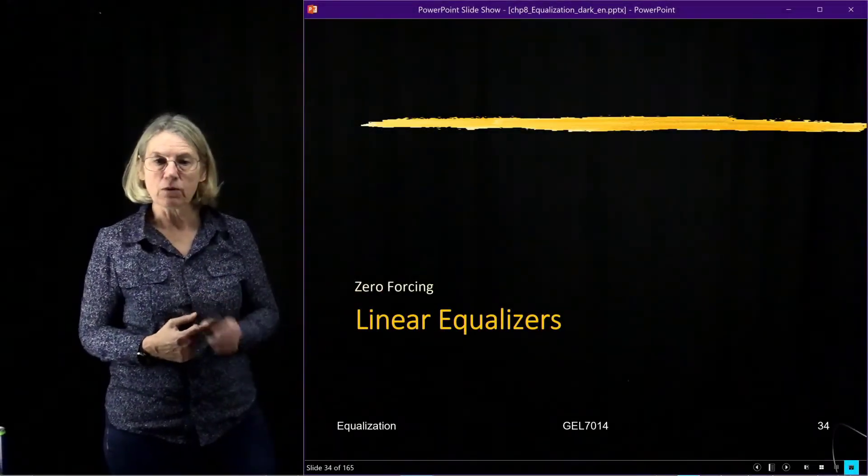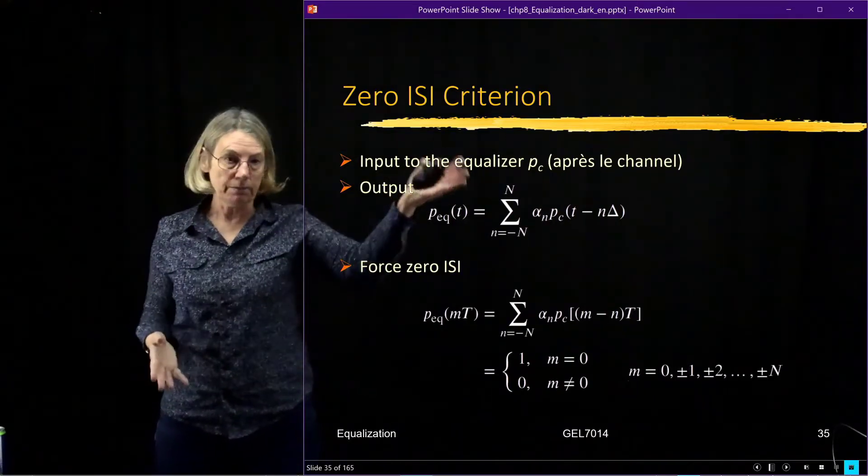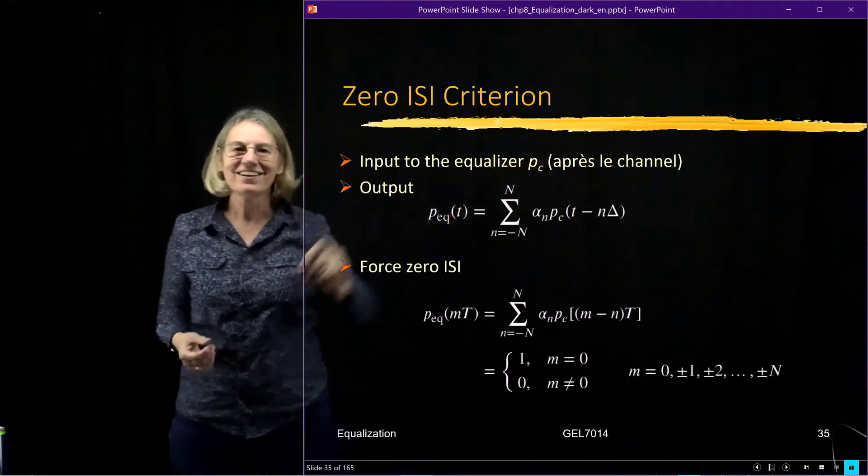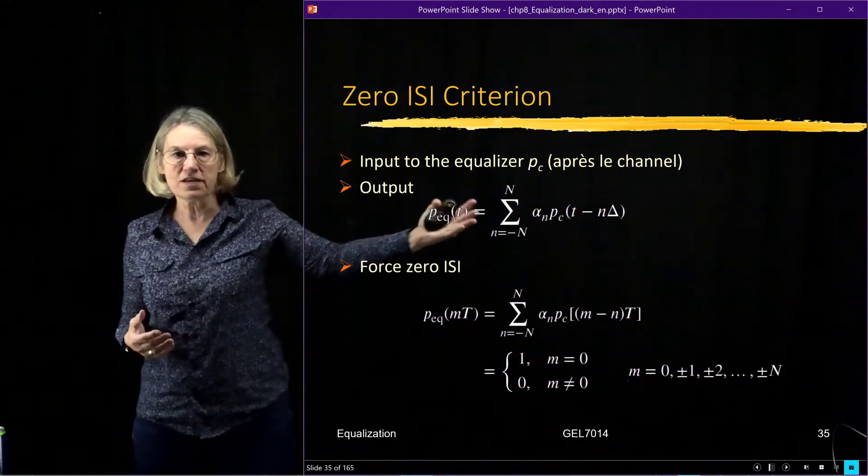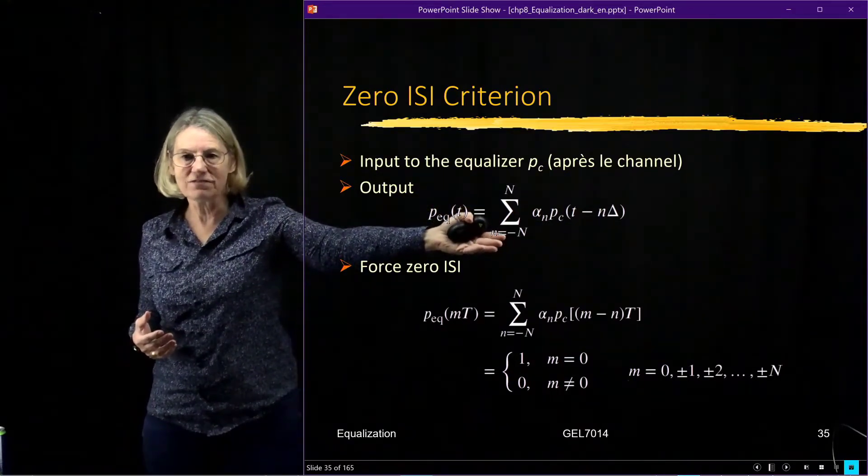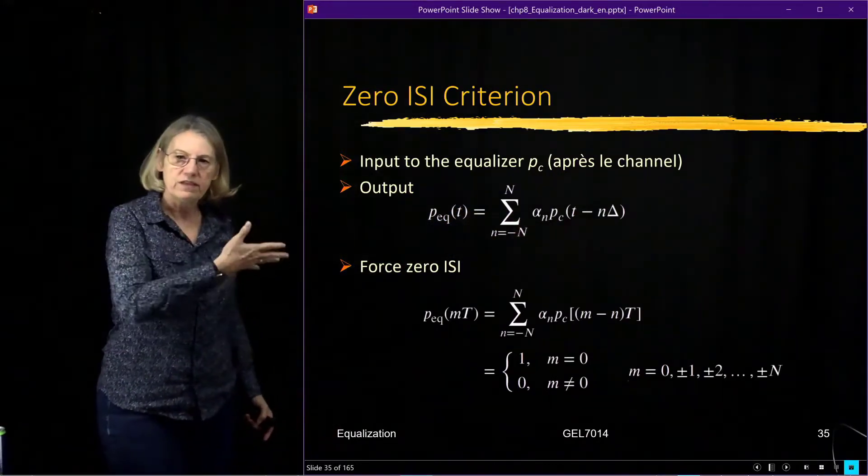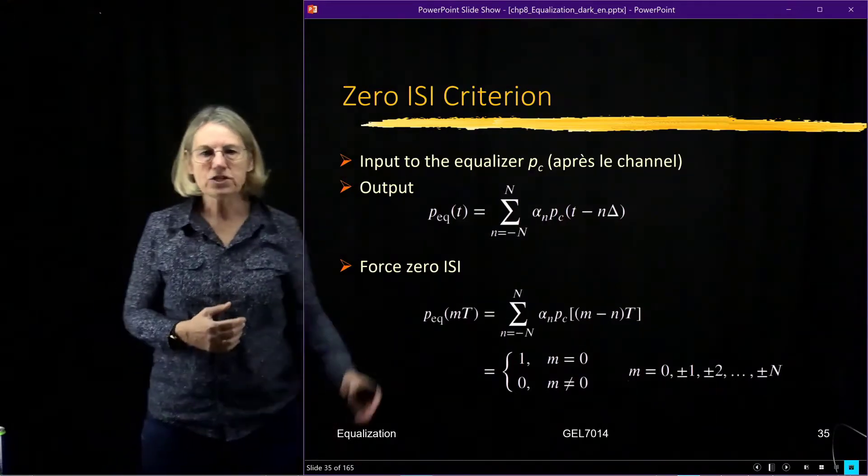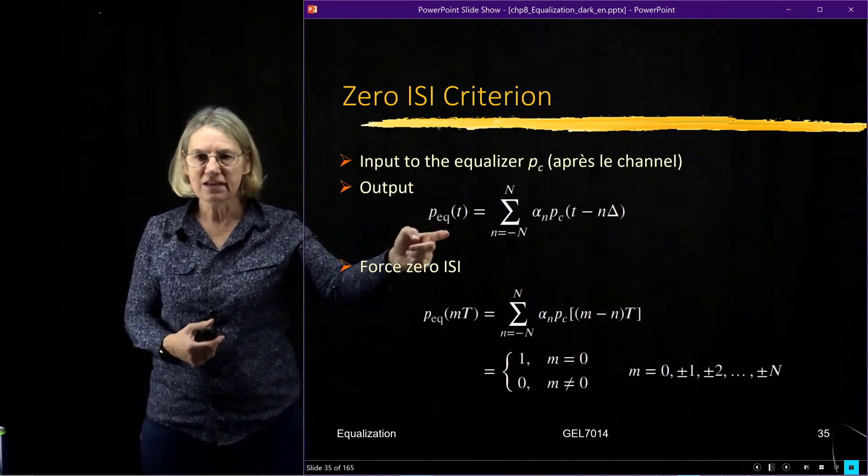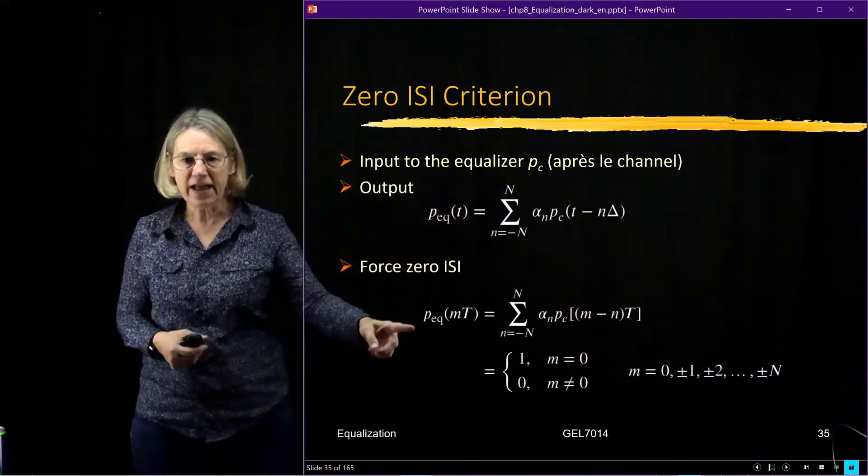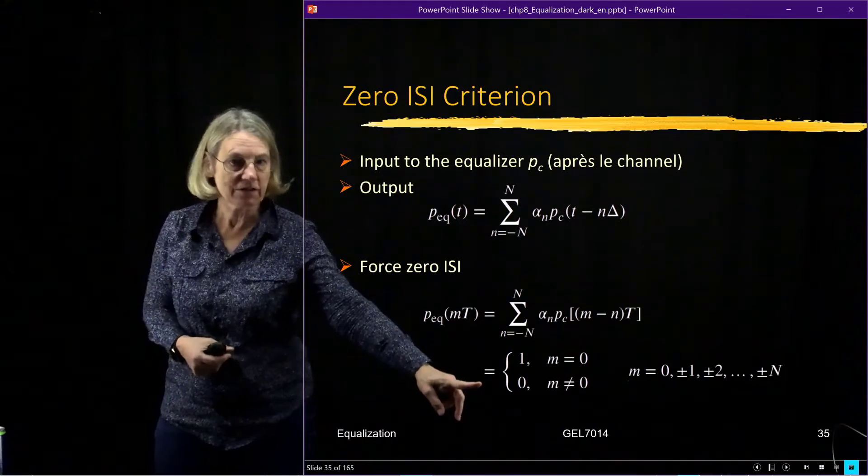So the zero-forcing linear equalizer. The input to the equalizer we call p_c after the channel, and the output of the equalizer then, I'll use the same equation for the output of the equalizer, which would be the result of the convolution of the input with the taps of the filter. So this is the output of the equalizer.